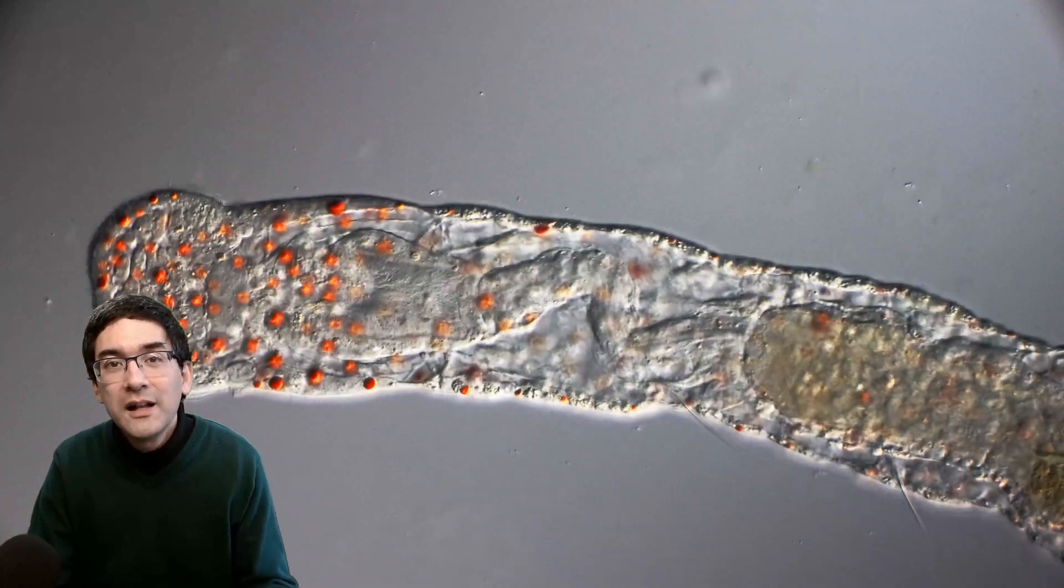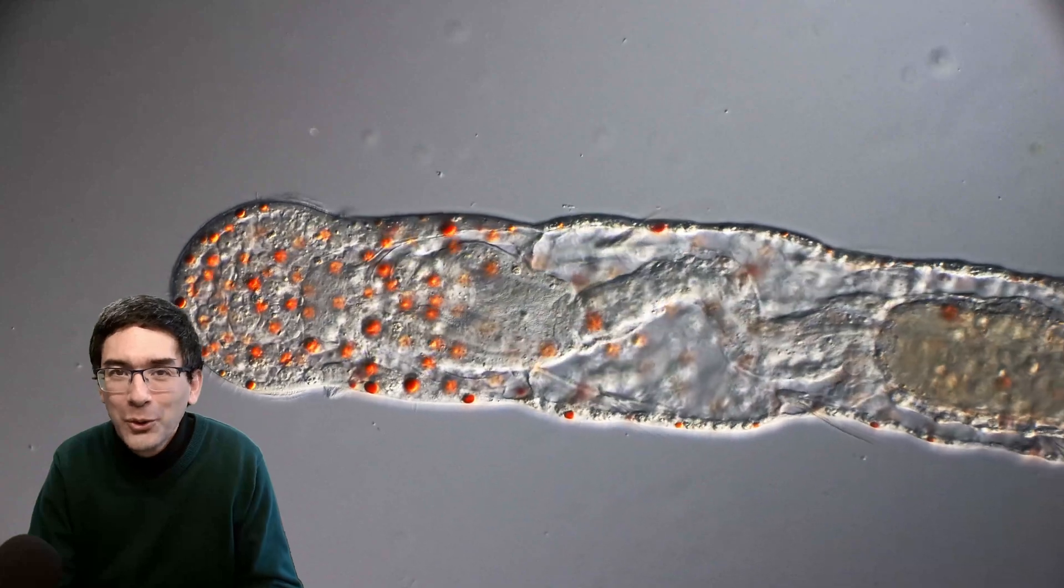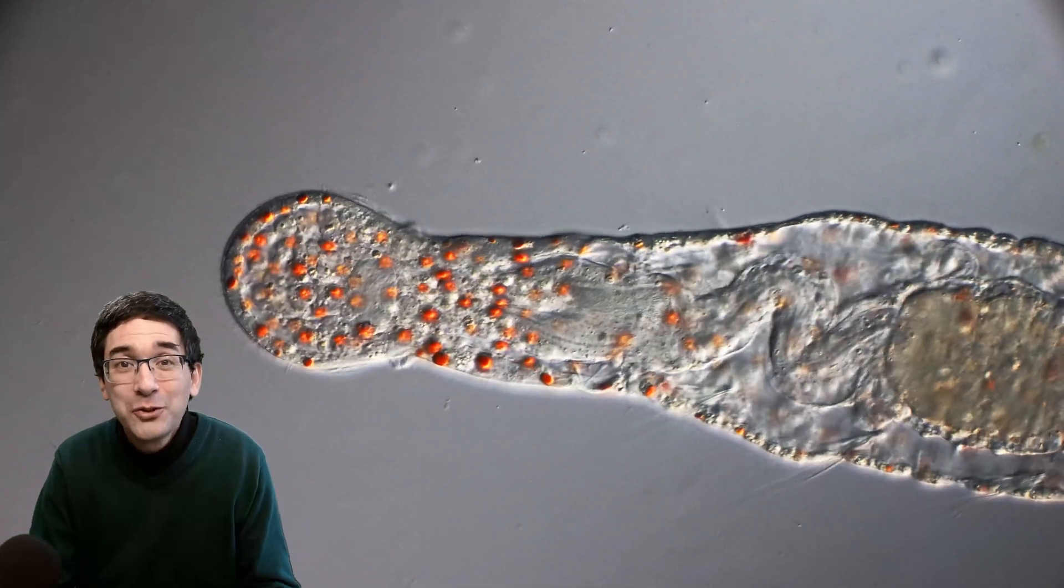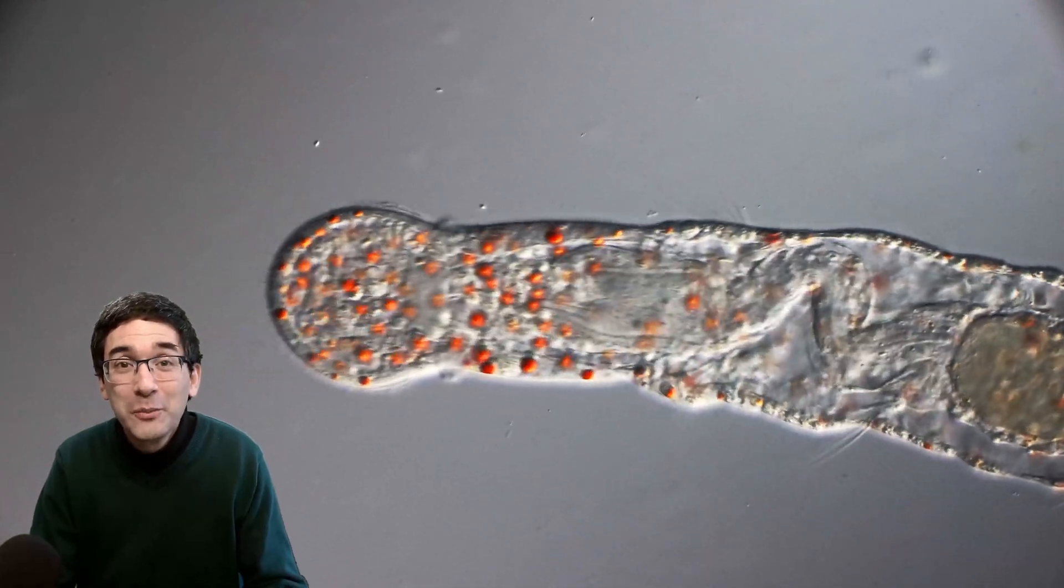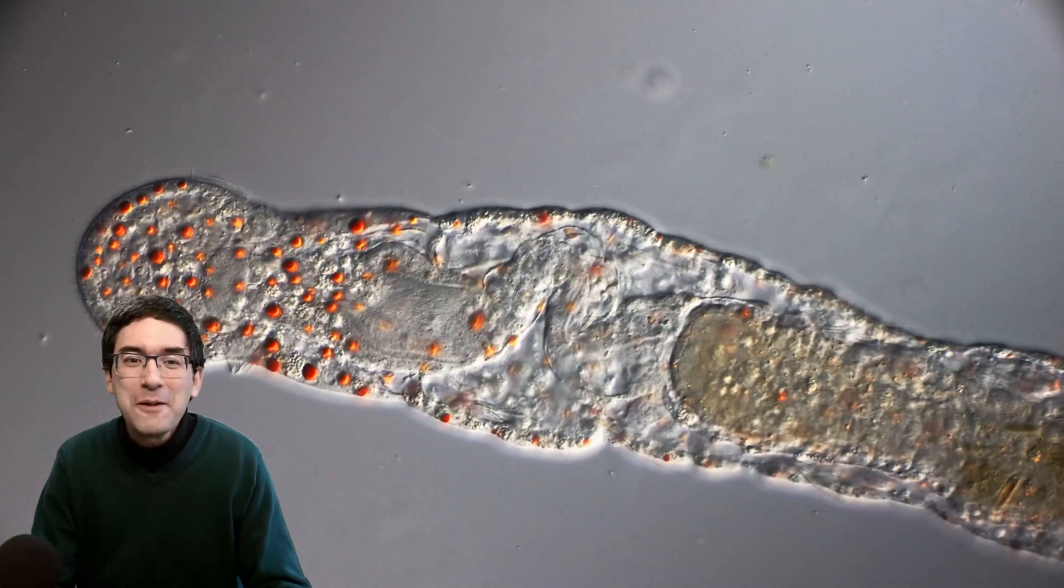Iolo refers to oil and soma to body, so it's the oil-bodied worm. In German, if you translate the German name of this worm into English, it means oil droplet worm—also quite a nice name.